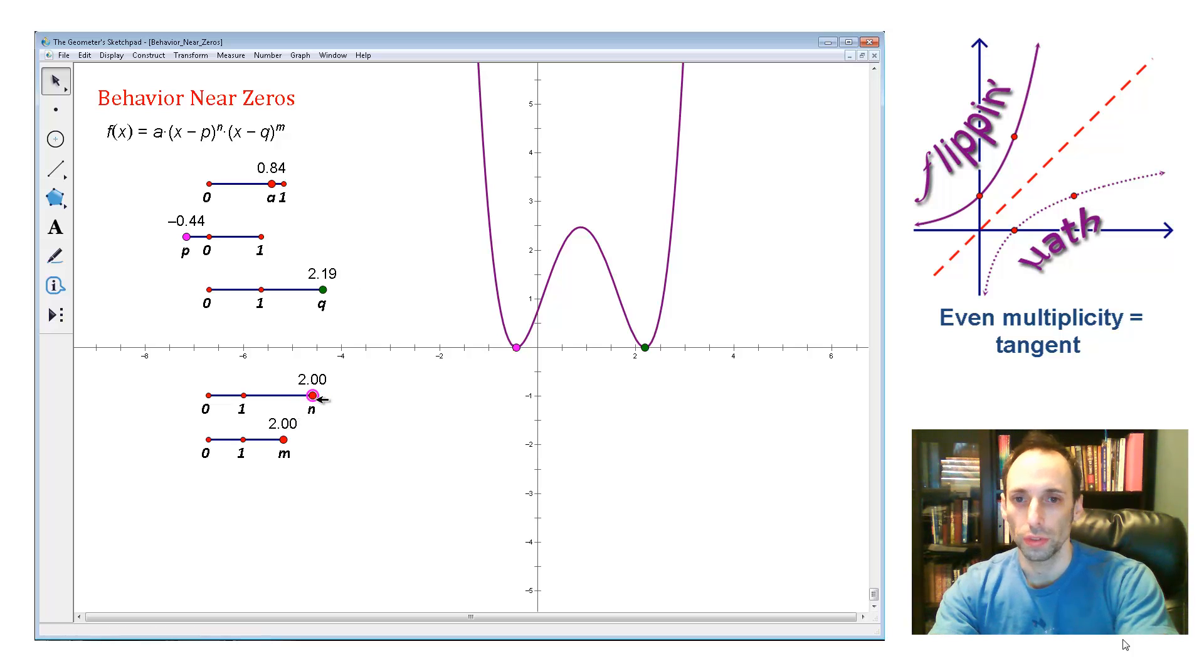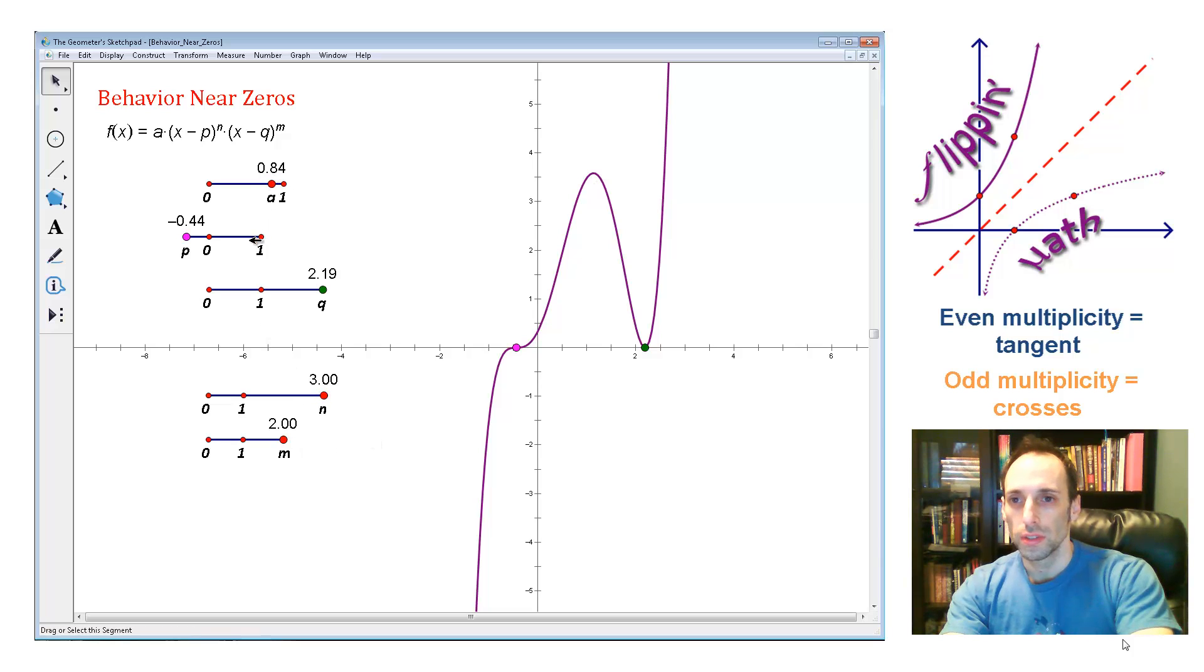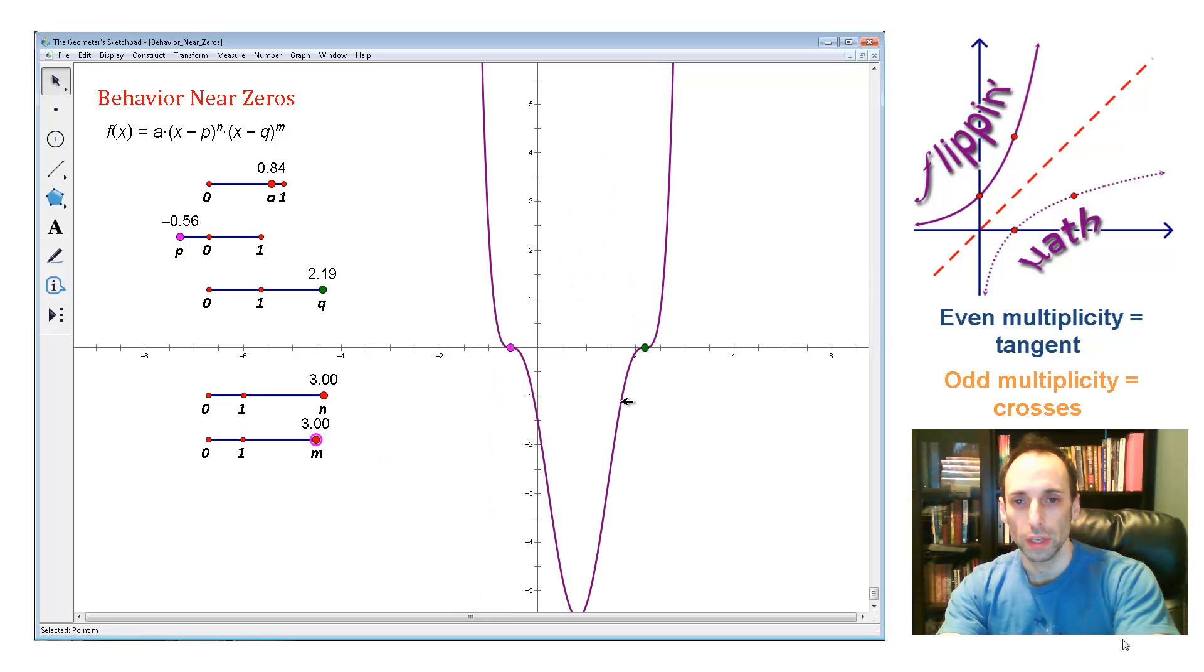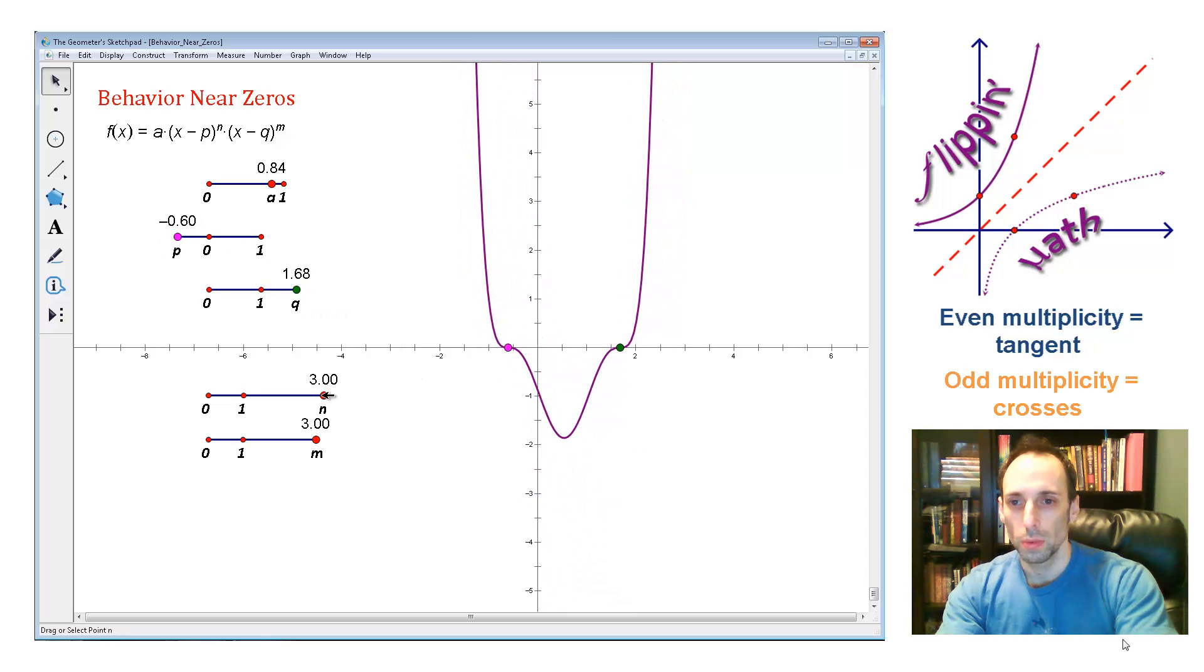Let's make n equal to three. So when n equals three, it's an odd number, and it crosses through again. The m is still even, so it bounces right off. Let's make m odd. Maybe I can make it another three. Look, it crosses through on both of them. That's pretty sweet.